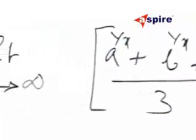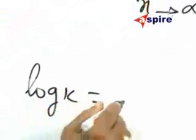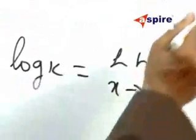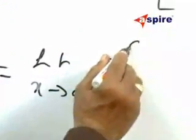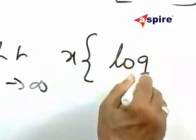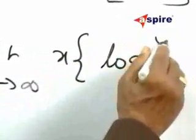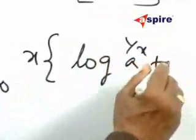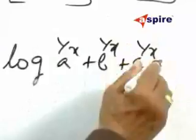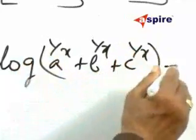Therefore, log K will be equal to limit X tends to infinity: that is X into logarithm of A to the power 1 by X plus B to the power 1 by X plus C to the power 1 by X minus log 3.